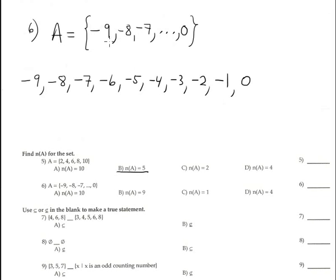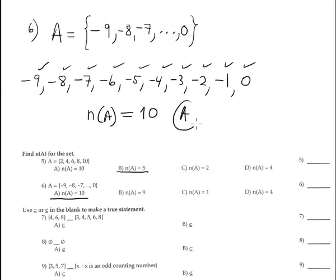Number 6 is similar. This is the given set, following the same pattern. Since we have 1, 2, 3, 4, 5, 6, 7, 8, 9, it's obvious then that cardinality of A is 10. Correspond with option A, 10. Perfect.